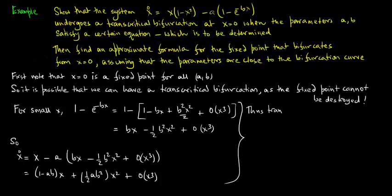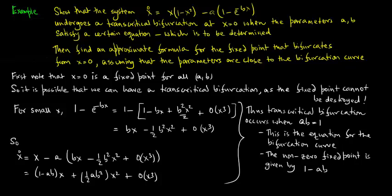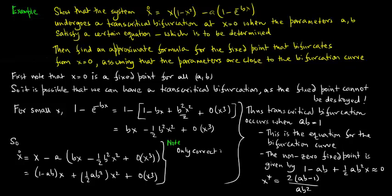The transcritical bifurcation occurs when ab = 1; this is the equation for the bifurcation curve. The non-zero fixed point is given by (1 - ab) + (ab²/2)x ≈ 0, so x* = 2(ab - 1)/(ab²). This formula holds only when ab is close to 1, i.e., when x* is small.